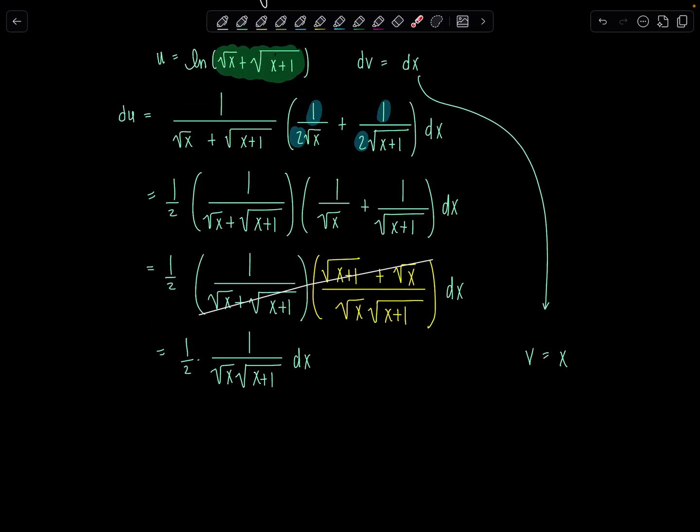So uv, let me put the x in the front, that'll look so nice. So we'll have x times natural log square root of x plus square root x plus 1 minus integral vdu. So that's going to be x over 2 square root of x square root of x plus 1 dx. Very nice. Very nice.